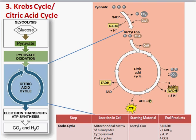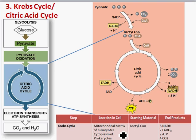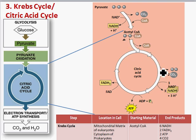Acetyl-CoA enters the citric acid cycle, also sometimes called the Krebs cycle. We're still in the mitochondrial matrix in eukaryotes and the cytoplasm in prokaryotes. Here are the two carbons from our original glucose that were converted into pyruvate and then into acetyl-CoA, entering the Krebs cycle where some important reactions occur.